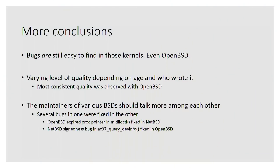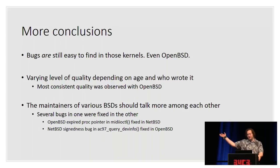Coming back to the beginning of my presentation: are things on equal footing? I think bugs are still very easy to find in the BSD kernels, probably about as easy as in the Linux kernel. Even OpenBSD — there were certain things I didn't see there, but it wasn't hard to find bugs. There's varying levels of quality between all three. The most consistent quality I found by far was OpenBSD — this comes back to their rigorous review process where every CVS check-in gets code reviewed. With the exception of the DRI/DRM stuff, the OpenBSD guys apply the same quality bar. That's a process that simply just works.